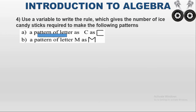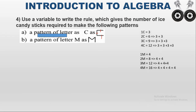The first pattern is C. The letter C can be made with 3 candy sticks. If I want to make one C, 3 candy sticks are needed. If I want to make two C's, that is 3 plus 3, so 3 is added 2 times — the answer is 6. For 3 C's, 3 is added 3 times. For 4 C's, 3 is added 4 times. So 3 is added again and again repeatedly.